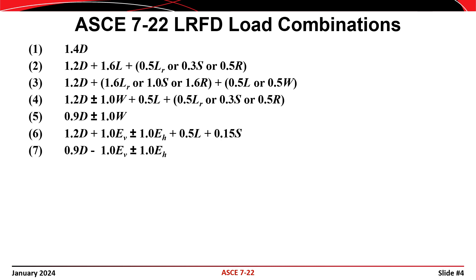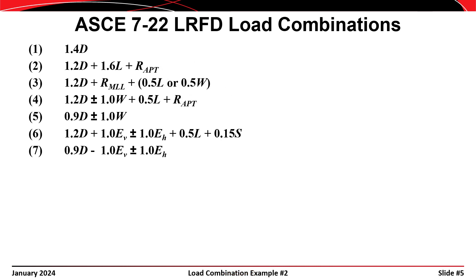Also note that combinations 2, 3, and 4 all include L sub r, S, or R. One of the first things we'll do is modify those combinations to include a roof loading taken as the maximum of the roof live load, snow load, and rain load. When we make that modification, the load combinations look like this, where we have rewritten load combinations 3, 4, and 5 using R in place of the roof loading.